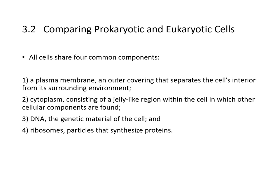When comparing prokaryotic and eukaryotic cells, all cells share four common components: one is the plasma membrane, two is the cytoplasm, three is the DNA, and four is the ribosomes. The plasma membrane is the outer covering that separates the cell's interior from its environment. The cytoplasm is a jelly-like region inside the cell where other cellular components are found. DNA is the genetic material of the cell, and ribosomes are the particles that synthesize protein.